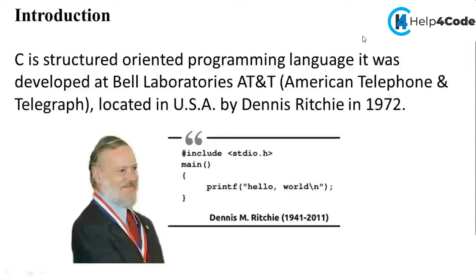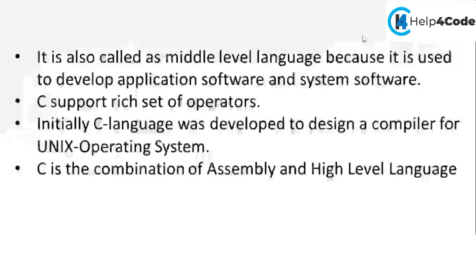C is a structure-oriented programming language developed by Denis Ritchie at AT&T Bell Lab in 1972. It is also called a middle-level language because it is used to develop both application software and system software.